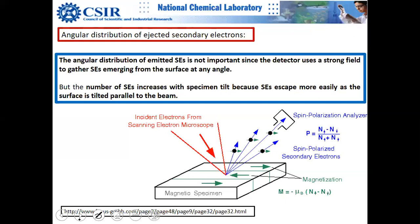For physics students interested in magnetism: if you have a magnetic sample with magnetic domains, electrons emitted from these domains will be spin-polarized — their spins polarized by the direction of the magnetic field. If your analyzer can detect electron spins of different directions, you can image the magnetic domains in SEM.